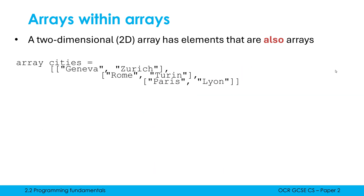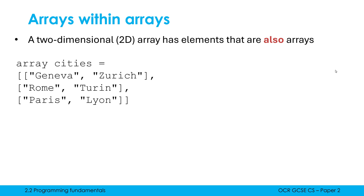I want to show you this so you're not thrown if you see it. Because 2D array declarations can get quite long, we occasionally write them across multiple lines. After each sub-array within the 2D array, I use a comma and move to a new line, so each sub-array is on a separate line. The key thing not to forget is that you have an opening square bracket and an ending square bracket belonging to the 2D array itself, not each individual array. That's why there's a double square bracket at the start and end - the outer ones belong to cities.